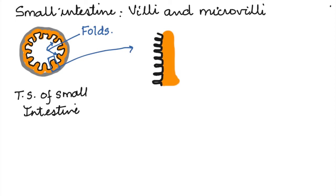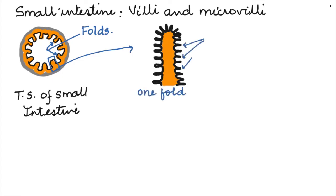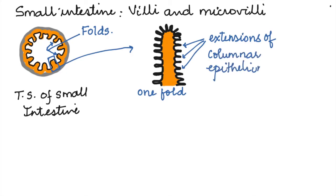This black part which I am drawing here is the columnar epithelium, which is in the form of projections. These projections — extensions of the columnar epithelium from one fold — are called villi.